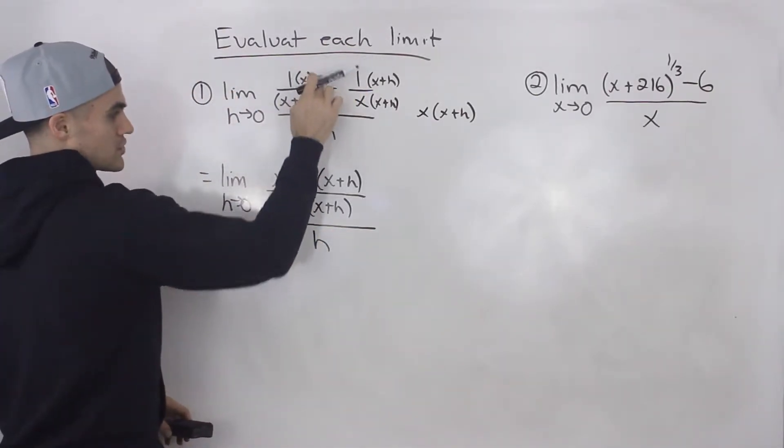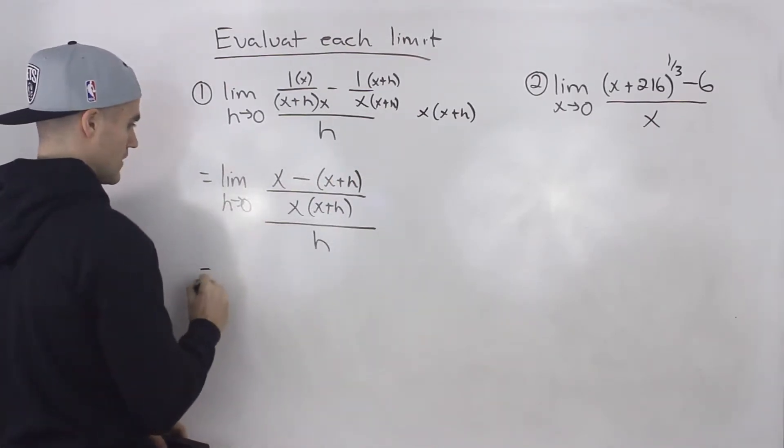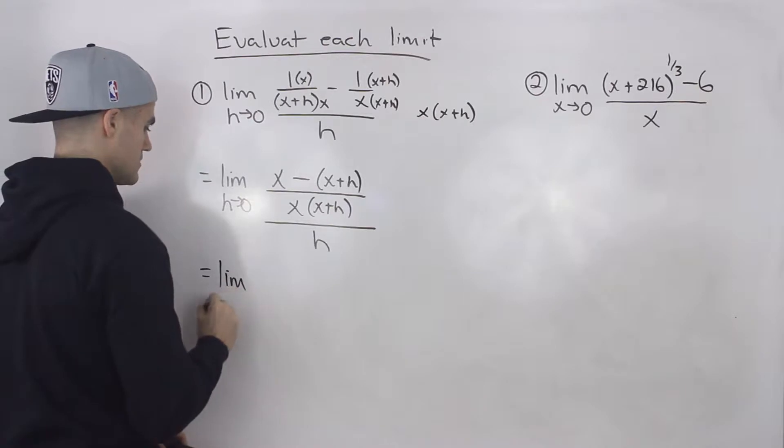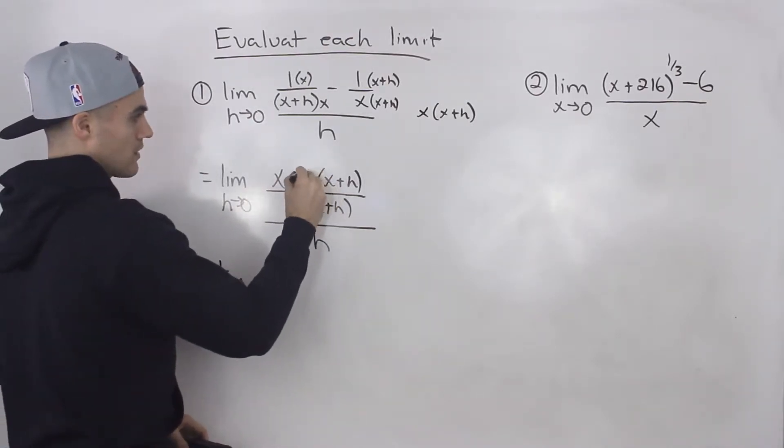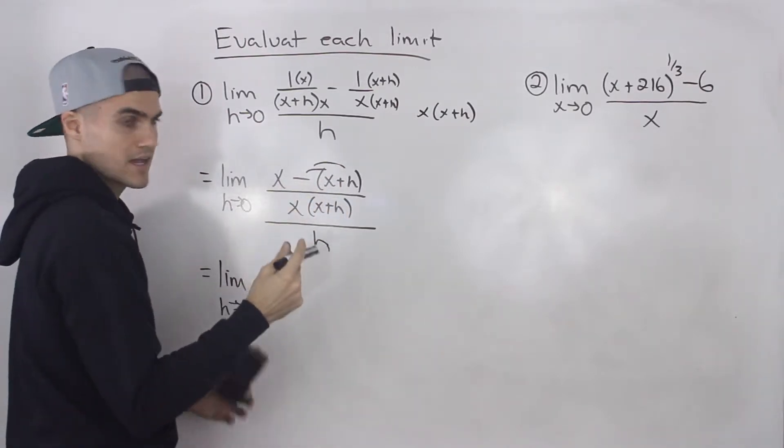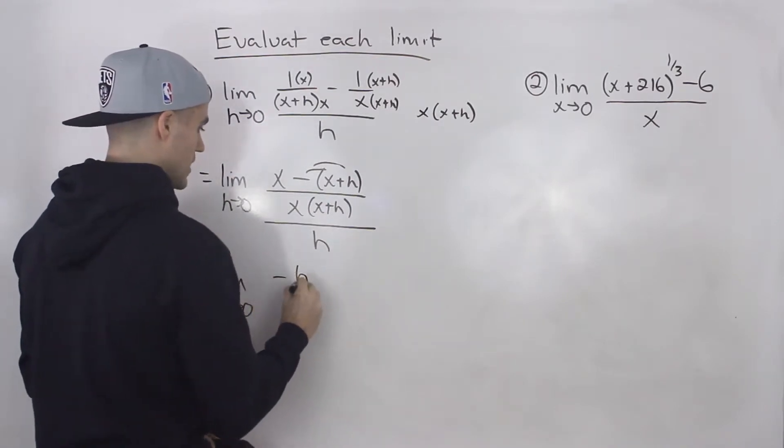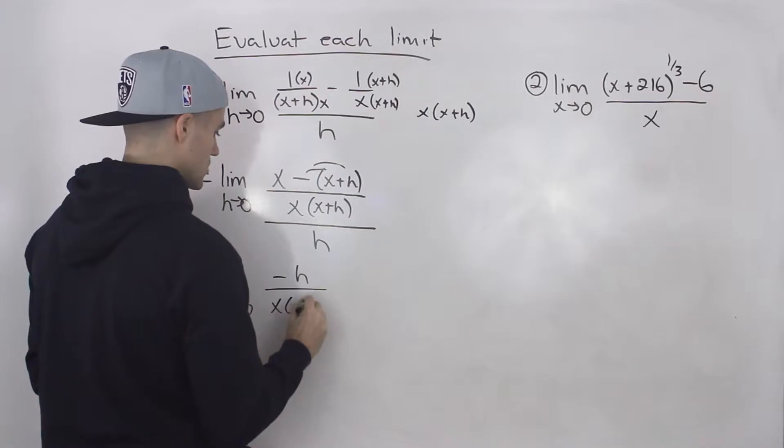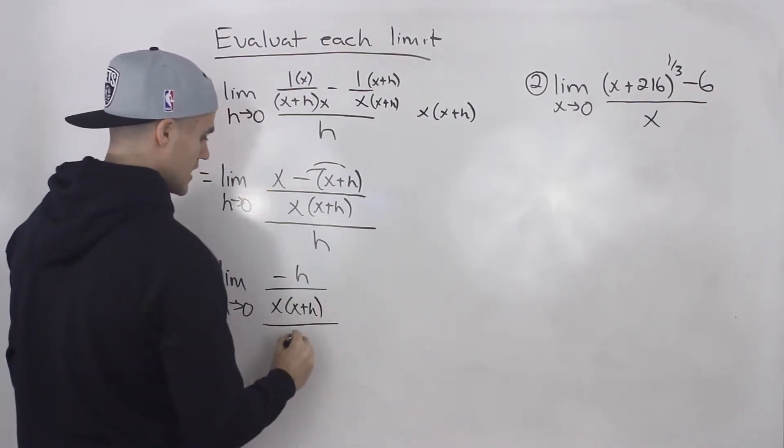So we just took these two fractions, made them into one fraction. And then notice that we can simplify that numerator here. If we distribute that negative inside the bracket, we'll have x minus x, which just nets out to zero. Then we'll be left with negative h up top. Then we'll have x times x plus h. And it's going to be all over this h value here.